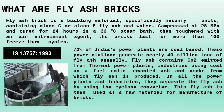This fly ash contains carbon dioxide limited from thermal power plants and industries using coal as fuel. It limits unwanted ash and smoke, from which the fly ash is produced. In all the power plants and industries, they separate the fly ash by using a cyclone converter. This fly ash is then used as a raw material for the manufacturing of fly ash bricks.